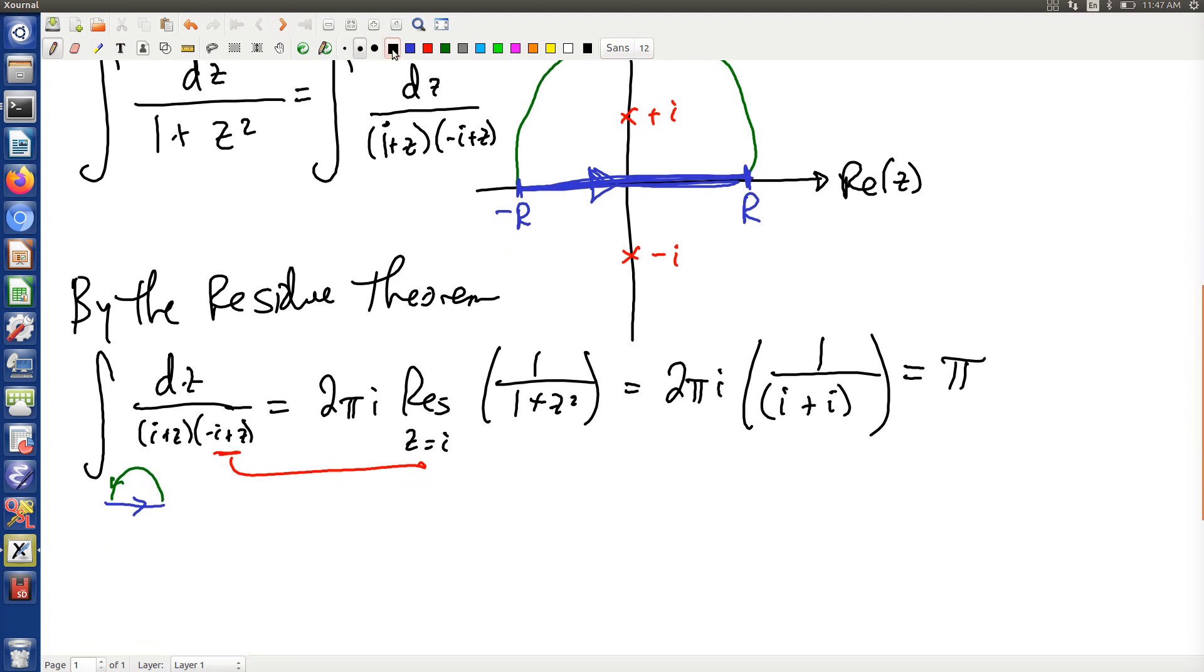On the other hand, not by the residue theorem, this is equal to the integral along the blue path, and I'm going to write it out as, with z's for the moment, and integral of the green path. This is just additivity of the integral.